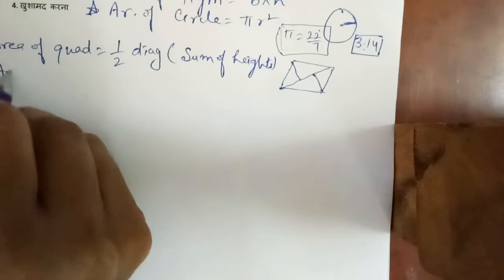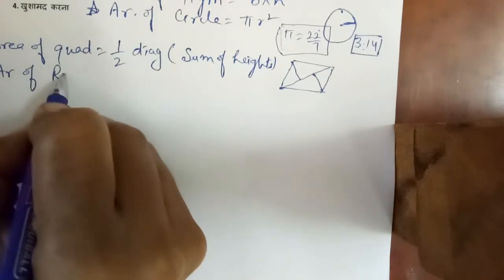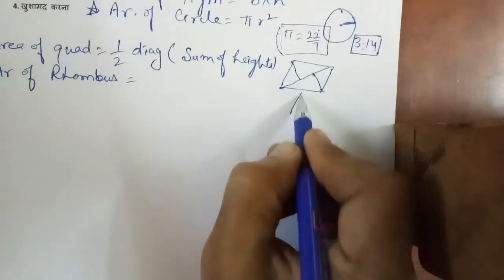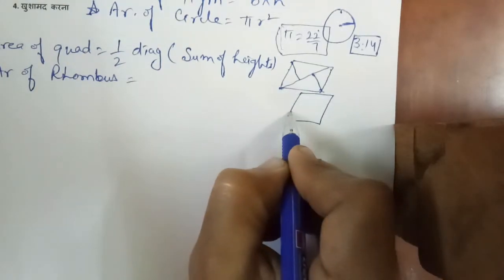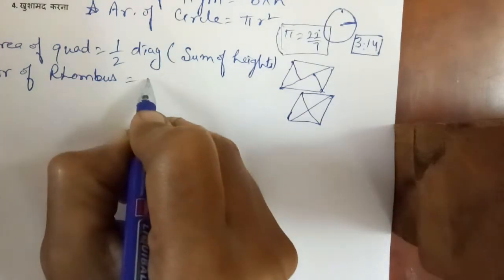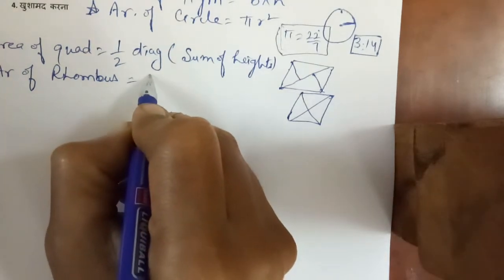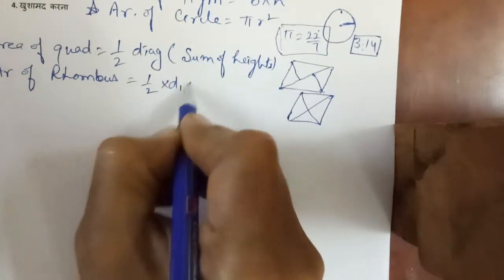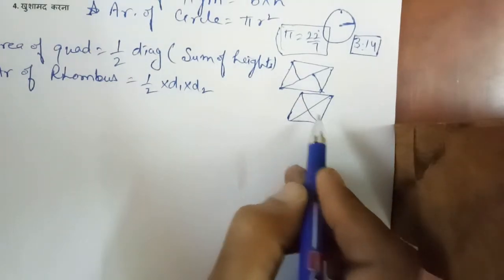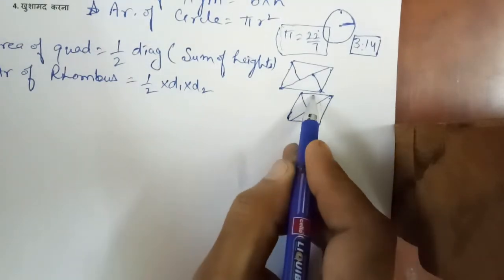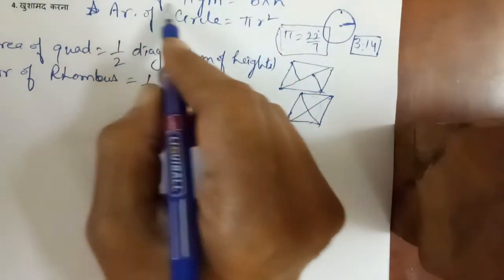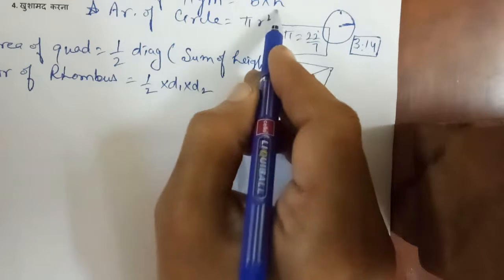One term is rhombus. Area of rhombus का क्या formula है? Rhombus is a figure whose all sides are equal. In this case, the formula is half of d1 into d2, where d1 means first diagonal and d2 means second diagonal. If diagonals are not given, then it is treated as a parallelogram and in that case area of parallelogram का formula लगाना है: base into height.